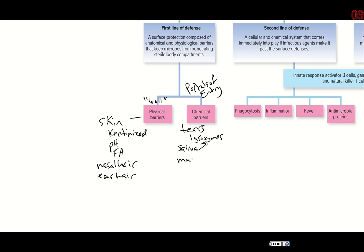Then we have mucus. The mucus in your nasal cavity is produced in response to any kind of foreign particle — it doesn't even have to be pathogenic. Sometimes people are allergic to things like pollen or cat dander. When the epithelium of the nasal cavity is irritated, it produces mucus to help push out the particles. We have pseudostratified ciliated cells that help sweep the mucus outwards.